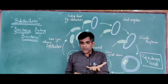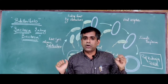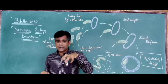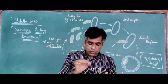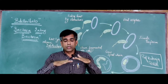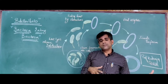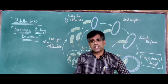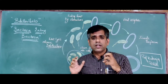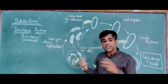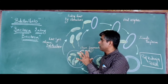To grow Bdellovibrio in the laboratory, you will have to grow the host first. On an agar plate with a lawn of E. coli, you will see clear areas — plaques — similar to what we see with bacteriophages. You can also grow them in the host-independent phase, but that phase is non-motile, amorphous, diffuse, larger in size, and very difficult to grow. So to maintain them in the laboratory, you must maintain the host cell.